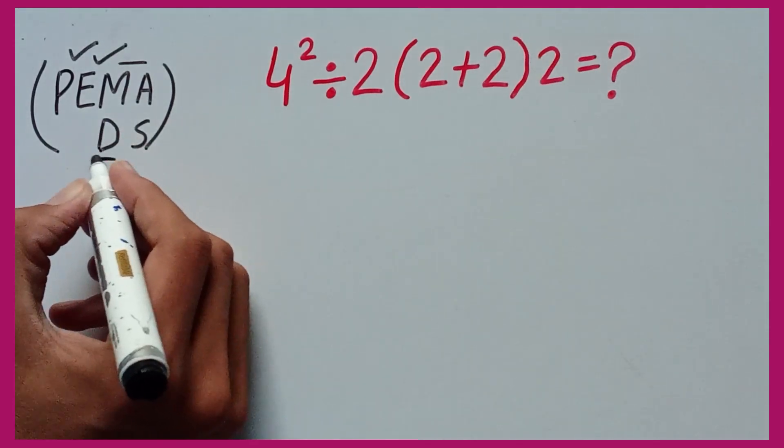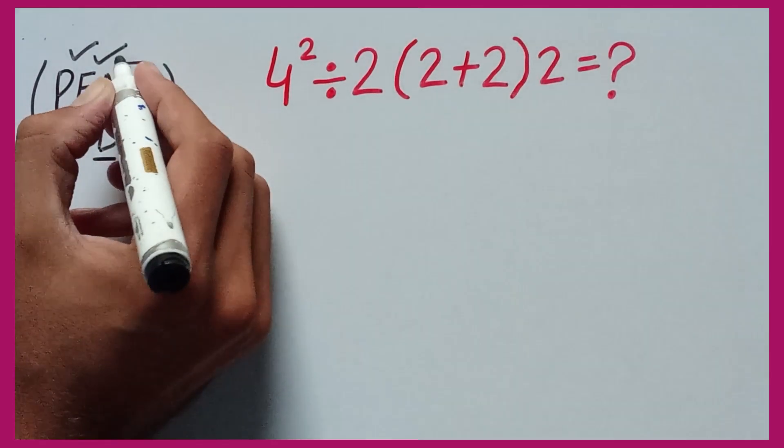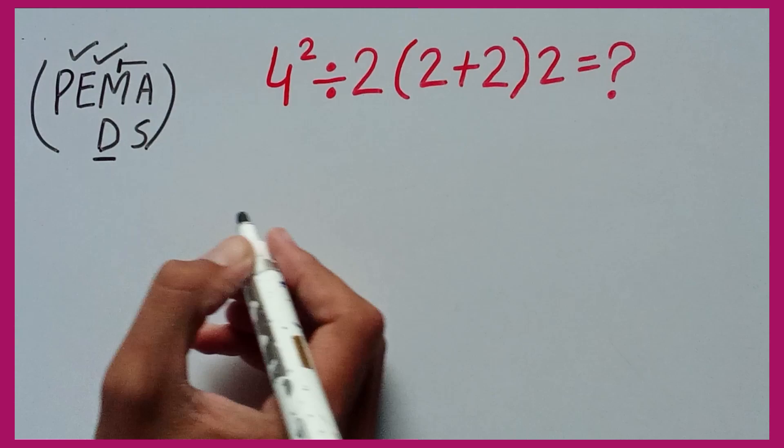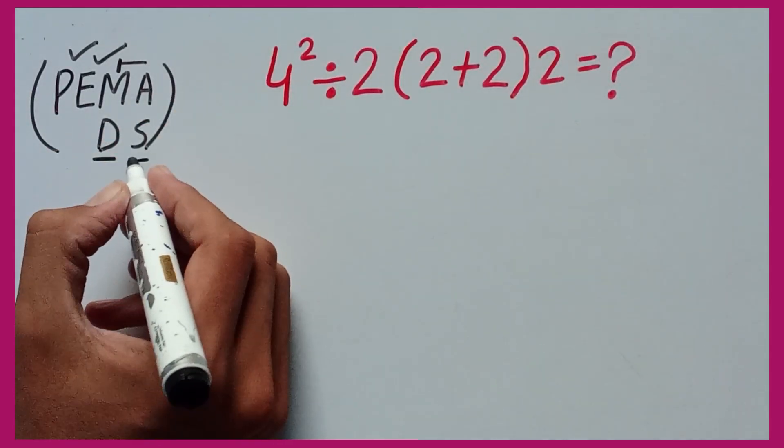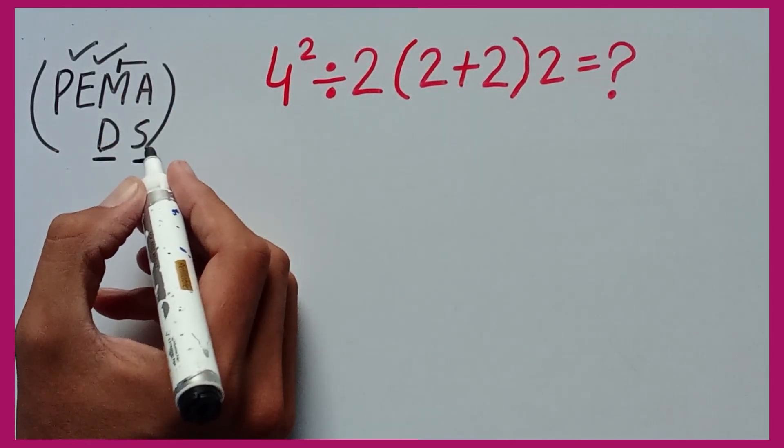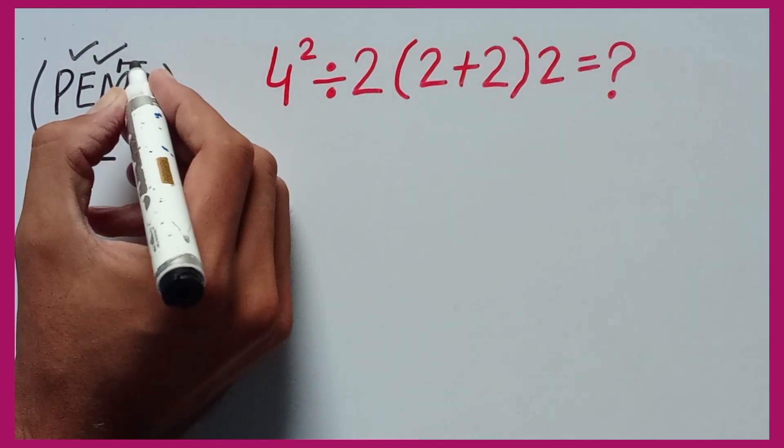Multiplication and division have equal priority and we have to solve from left to right. Similarly, addition and subtraction have equal priority and we have to solve from left to right, but one thing you must remember is that multiplication and division have higher priority than addition and subtraction.